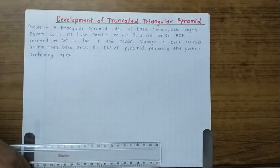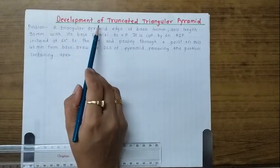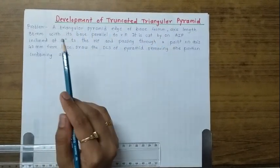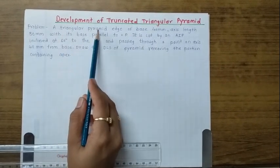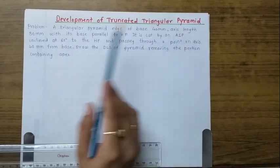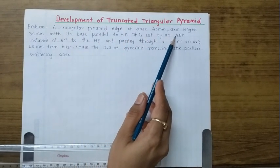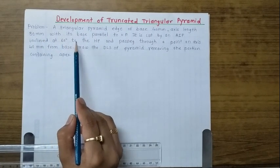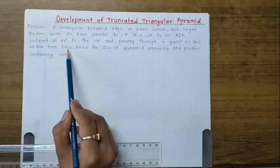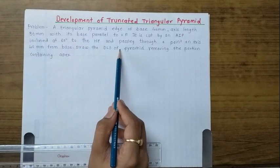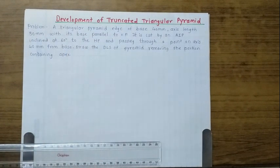Hello students, welcome back. In this video we are going to study the development of a truncated triangular pyramid. The problem states: a triangular pyramid with base 40 mm and axis length 80 mm, with its base parallel to VP, is cut by an auxiliary inclined plane inclined at 60 degrees to the horizontal plane and passing through a point on the axis 40 mm from the base. Draw the development of the solid removing the portion containing the apex.